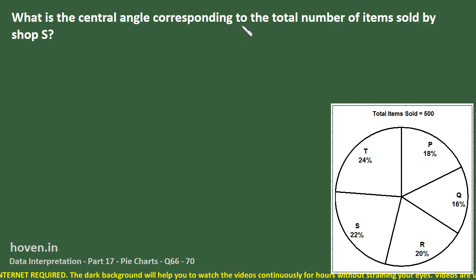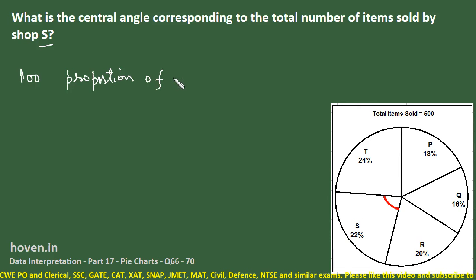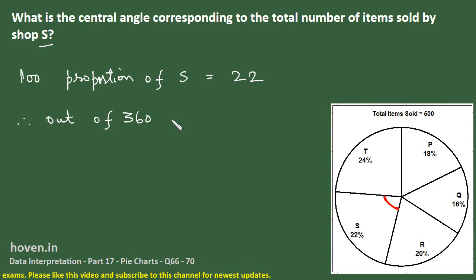What is the central angle corresponding to the total number of items sold by shop S? The percentage of S is 22. The simple method is that out of 100, proportion of S is equal to 22. And this proportion, out of 360, will be 22 by 100 into 360, by the plain unitary method.